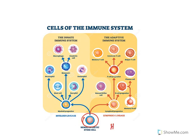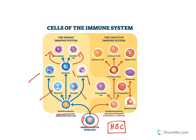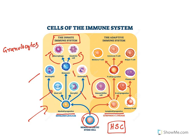The hematopoietic stem cell (HSC) gives origin to all immune cells. From the myeloid progenitor you get neutrophils, basophils, eosinophils, monocytes — which develop into macrophages and dendritic cells — and mast cells. Natural killer cells also come from this lineage. All these are part of the innate immune system. From the lymphoid progenitor you get B cells and T cells, which make up the adaptive immune system.